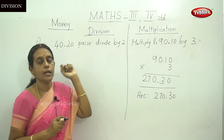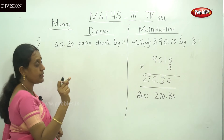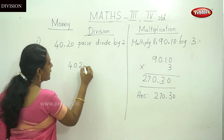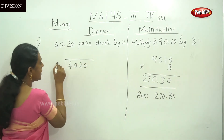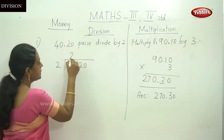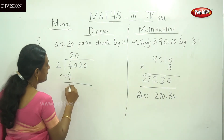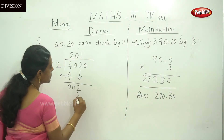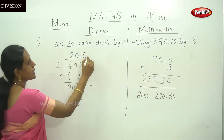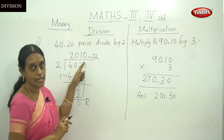Here 40 Rupees 20 Paise is the dividend and 2 is the divisor. For division, you ignore the dot and write 4020 as a normal division with divisor 2. Take the first digit: 2 twos are 4, remainder 0. Bring down 2: 1 two is 2, remainder 0. Bring down 0, and so on, giving a quotient.